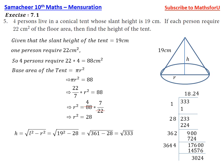Continuing the calculation to two decimal places, we get 18.24. Therefore, the height of the tent is 18.24 centimeters.